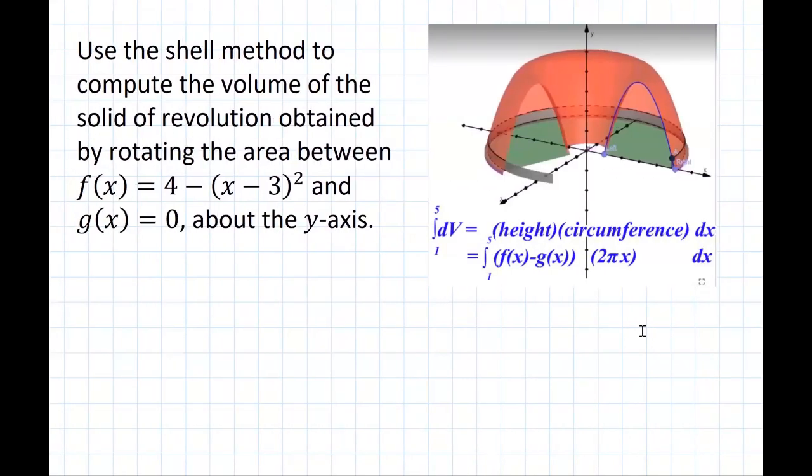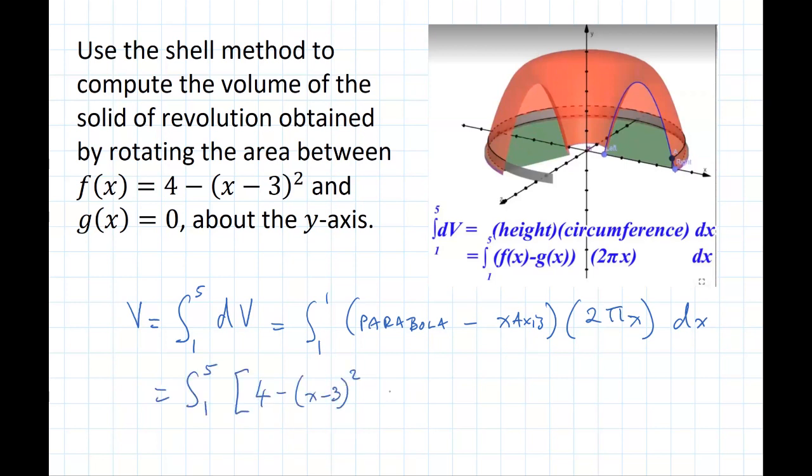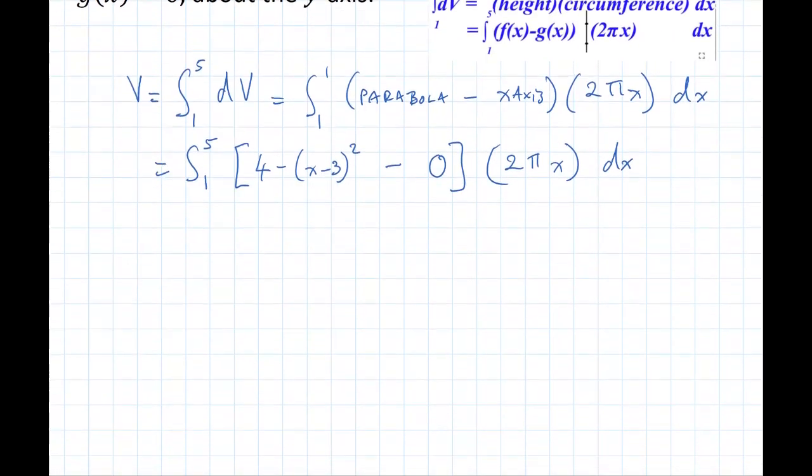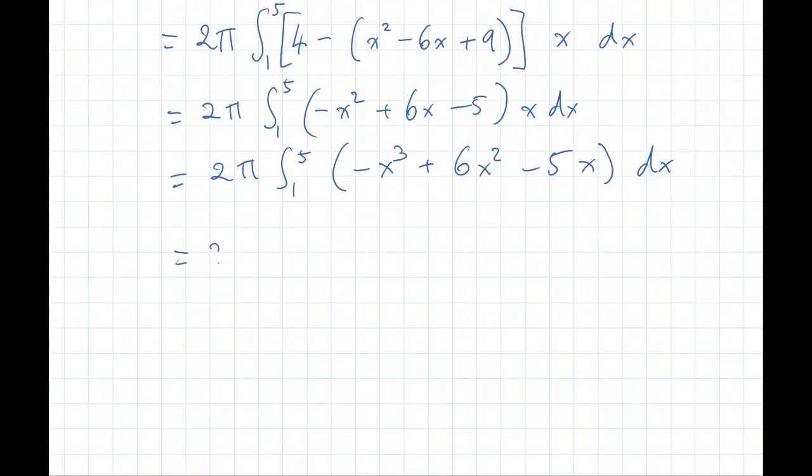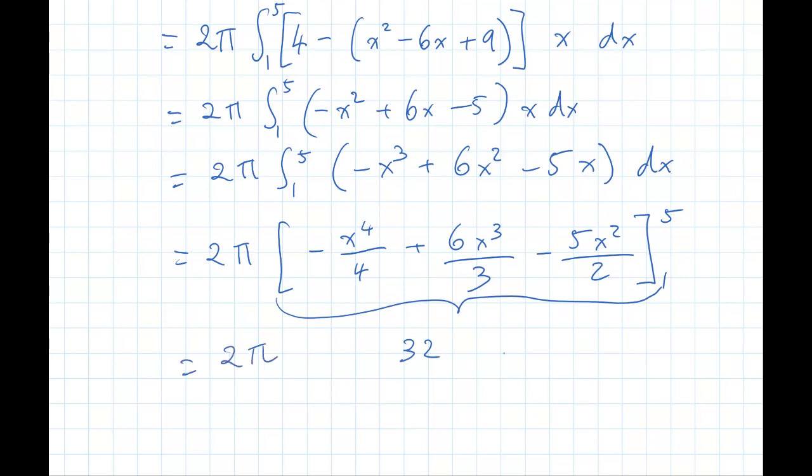All right, let's bring up the original question again. We have the volume. It's integral from 1 to 5 of f(x) minus g(x), that's parabola minus the x-axis, times 2πx times dx. Plug in the equation of the parabola. The x-axis is just 0. Factor out the 2π and multiply out the square. Simplify and multiply the x. And integrate. I get all of that from 1 to 5. Put into my calculator and get 32 times 2π. The answer is 64π.